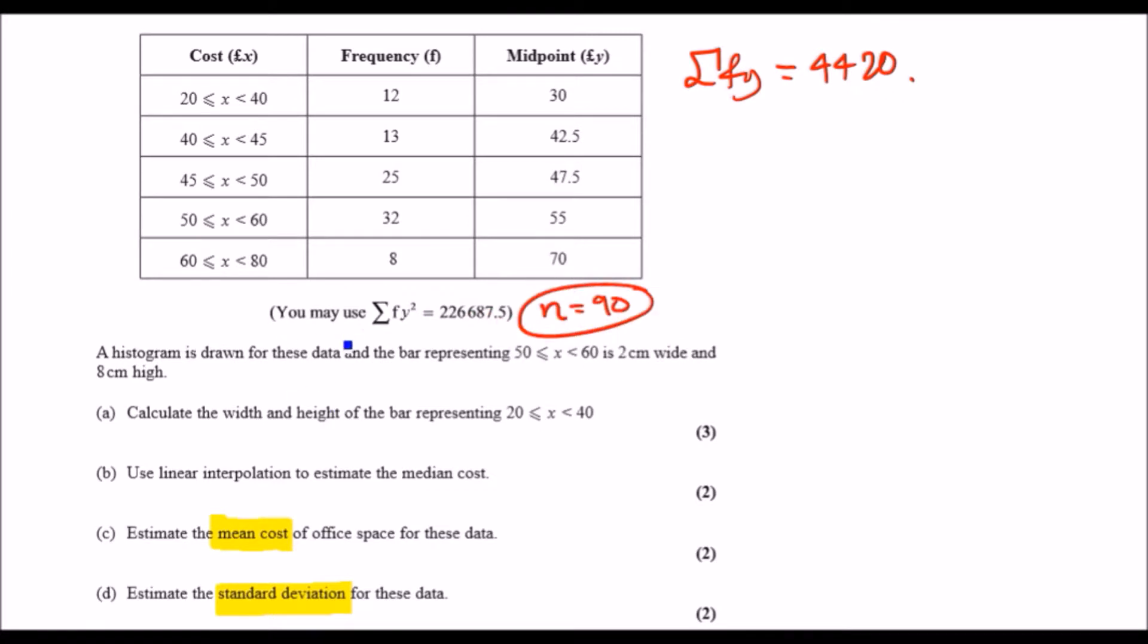Now here we need to estimate the mean and the standard deviation for this data. I've already gone ahead and put n is 90 as usual, and I've now added the sum of fy. The way this is calculated is that we first need to multiply the frequency with the midpoint y, so f times y, and then just add them all up. Multiply all of these and then add them up together, you should get this result.